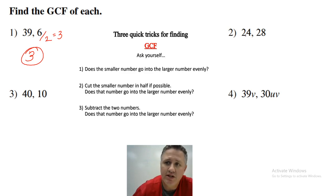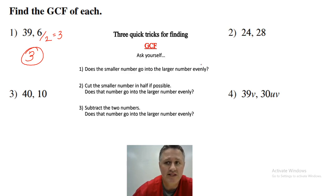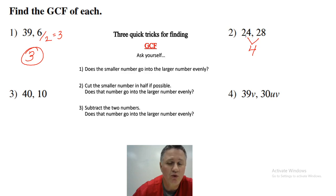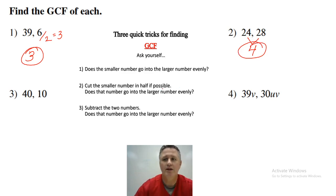Number two: does 24 go into 28? Does the smaller go into the larger? No. If I cut the smaller number in half, I get 12. Does that go into 28? No. So if I subtract the two, I get 4. Does 4 go into 24? Yes. And does 4 go into 28? Yes. That is the GCF. So that saves us a lot of time.